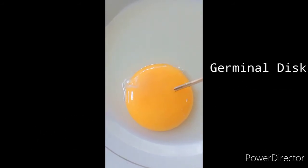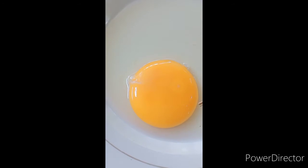This is the germinal disc. It is a structure that looks like a depression located in the yolk surface. Vitelline membrane.